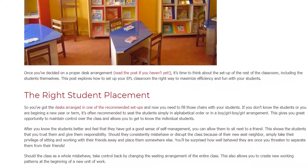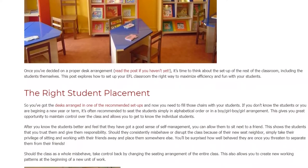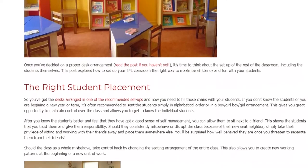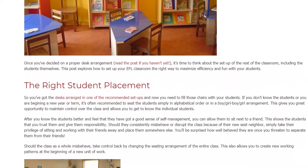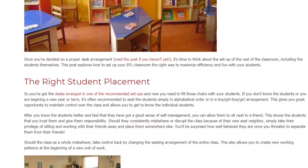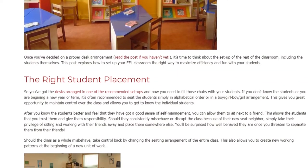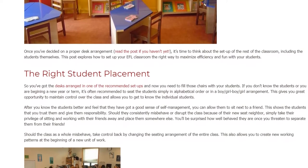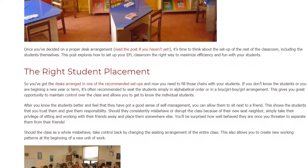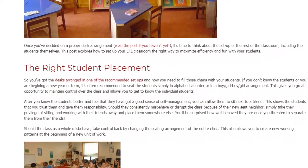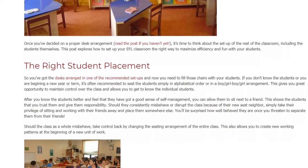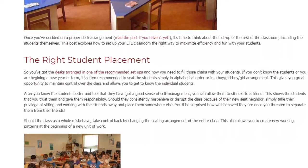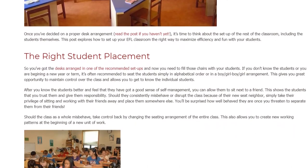After you know the students better and feel they have a good sense of self-management, you can allow them to sit next to a friend. This shows the students that you trust them and gives them responsibility. Should they consistently misbehave or disrupt the class because of their new seat neighbor, simply take away their privilege of sitting with friends and place them somewhere else.